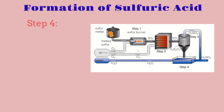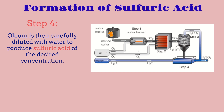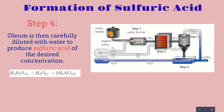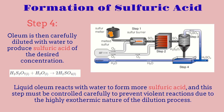For step 4, this is the formation of sulfuric acid. Oleum is then carefully diluted with water to produce sulfuric acid at the desired concentration. The formula is: oleum plus water equals sulfuric acid. Liquid oleum reacts with water to form more sulfuric acid, and this must be controlled carefully to prevent violent reactions due to the highly exothermic nature of the dissolution process.